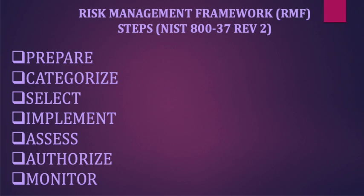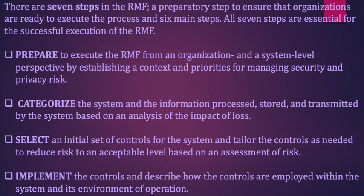These are the updated risk management framework steps: preparation step, categorize, select, implement, assess, authorize, and monitor. Each of these steps has tasks that need to be performed in order to adequately authorize an information system into production. There is a preparatory step to ensure organizations are ready to execute the process, and six main steps. All seven steps are essential for the successful execution of the RMF.